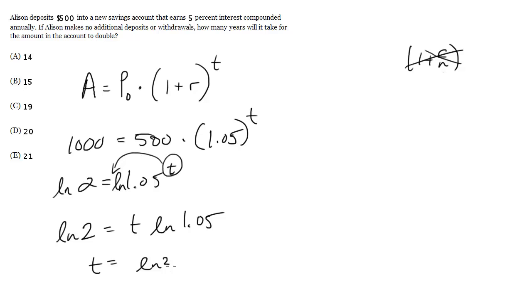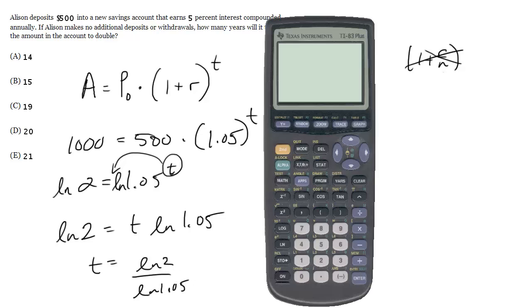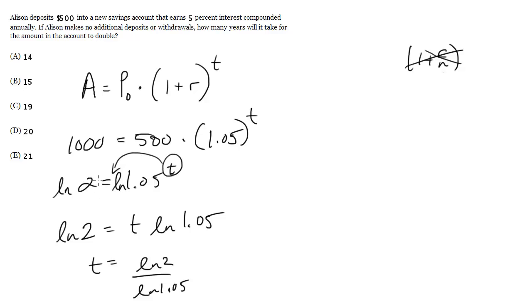So T equals LN of 2 over LN of 1.05. These are just numbers, we can find these in the calculator. So LN of 2 divided by LN of 1.05 gets us 14.2 years.